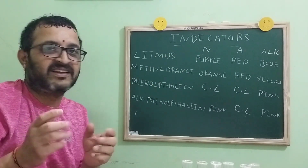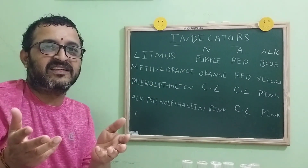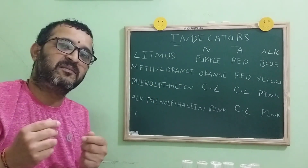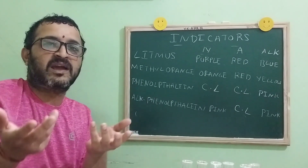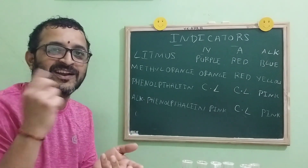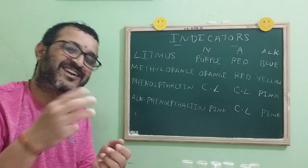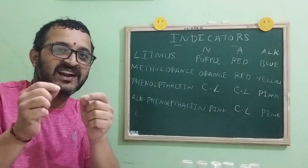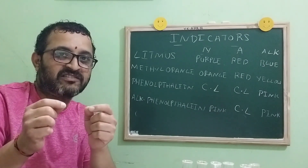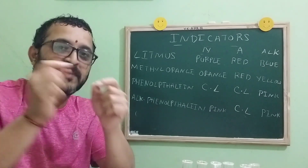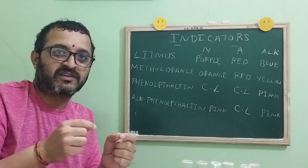What are indicators? Indicators are nothing but a chameleon. How is it a chameleon? A chameleon changes its color according to its surroundings. In the same way, indicators are going to change their color according to the pH values.